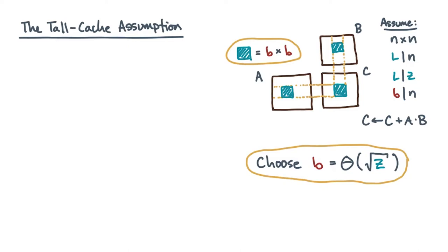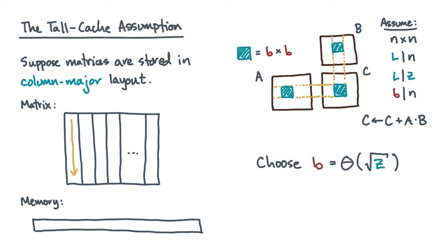Now there's a subtle detail here about what fitting in cache means. To see it, suppose the matrices are stored in column major order. That means the elements of each column are laid out consecutively in linear memory addresses with one column following the other. This layout is common in linear algebra packages, though note that languages like c and c++ assume, by default, that a two-dimensional array uses row major order.